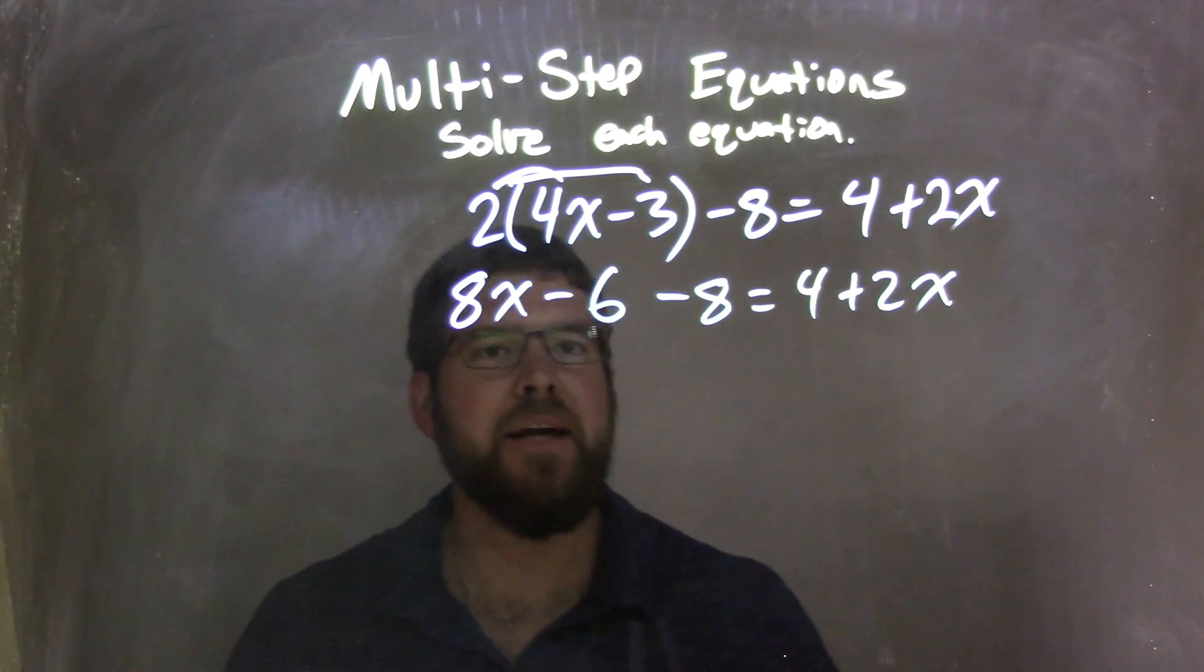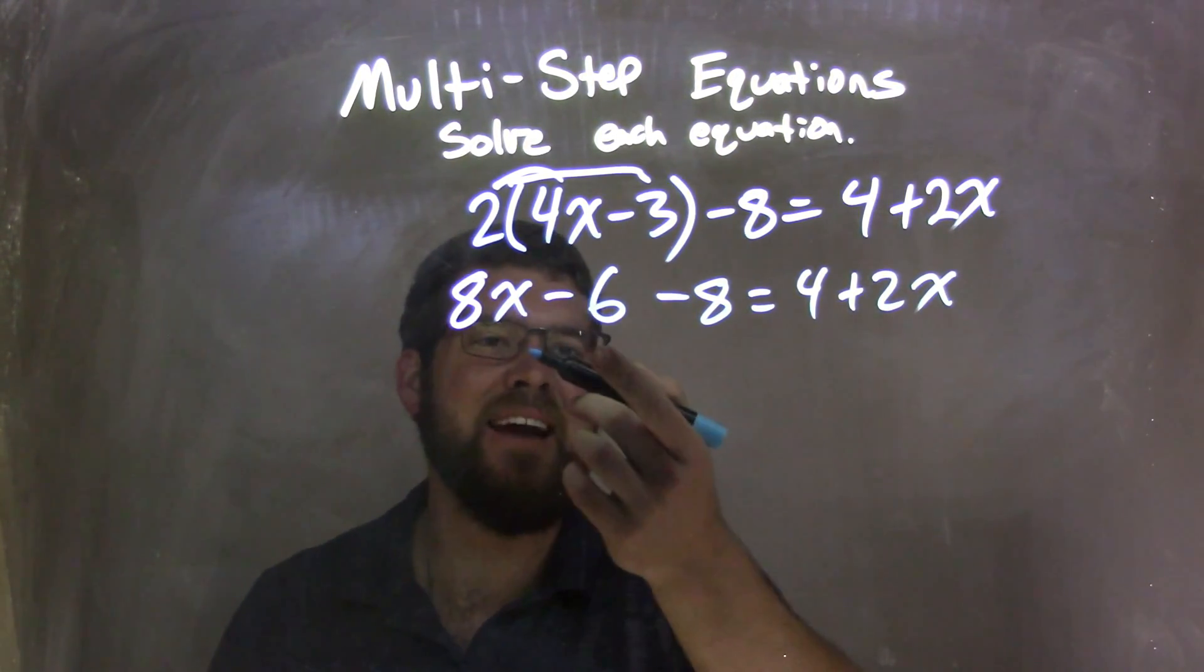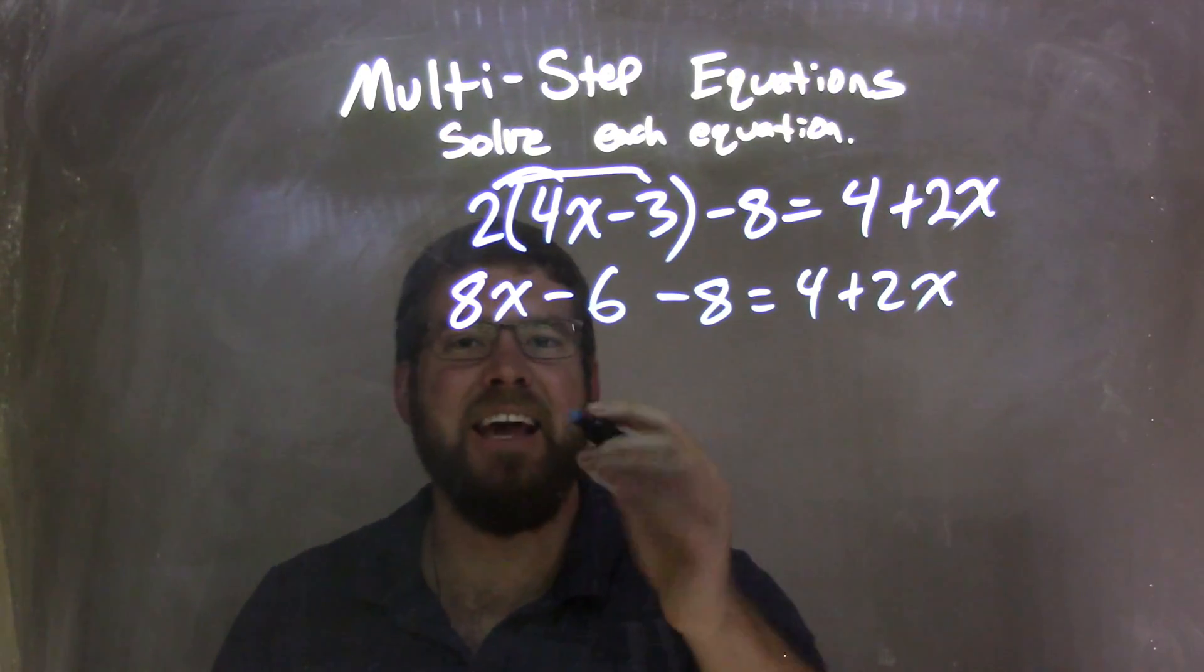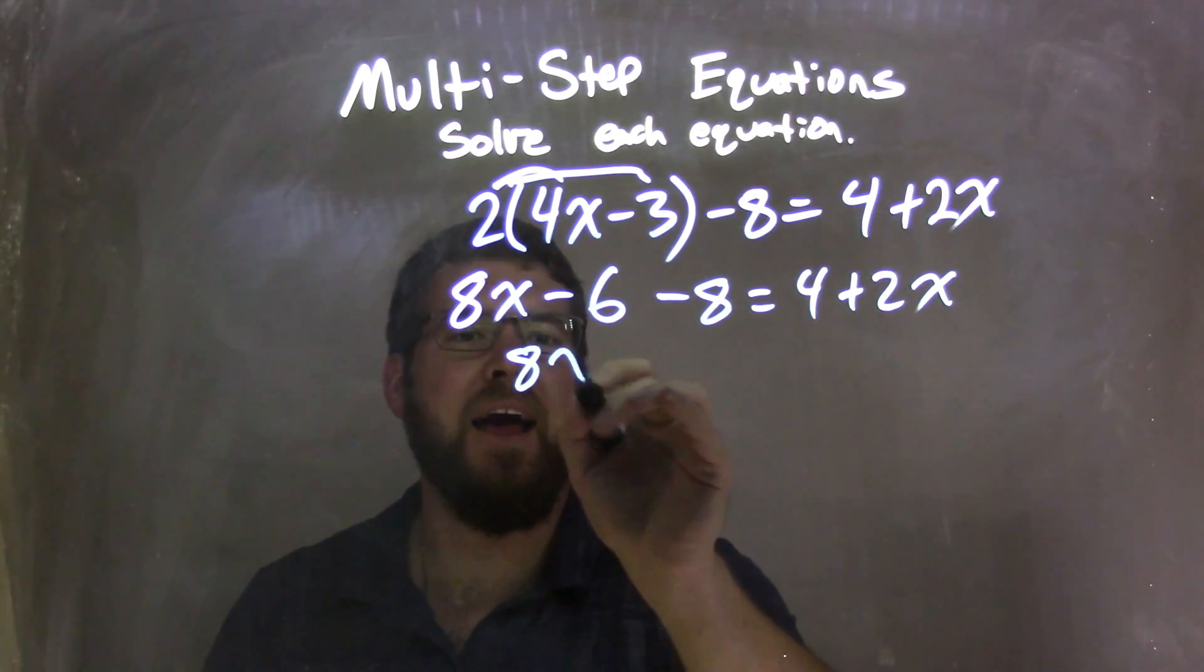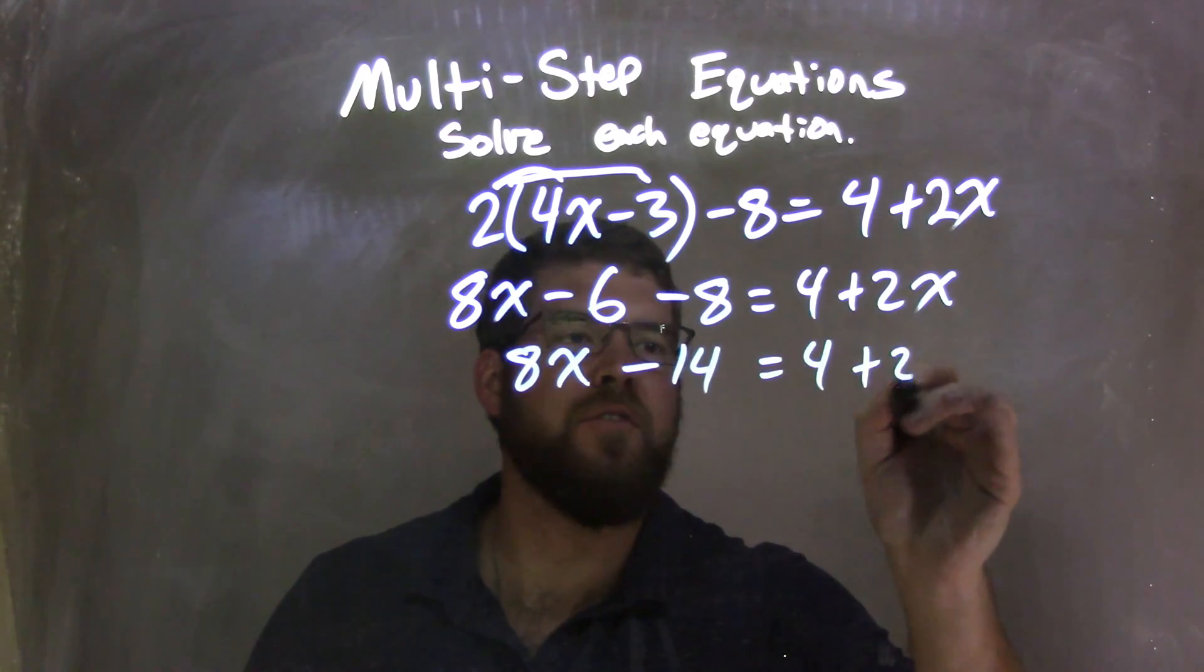Well, when I combine my like terms, I have really that minus 6 is that plus a negative, so the negative 6 minus 8 is a negative 14. So I have 8x minus 14 here, equals 4 plus 2x.